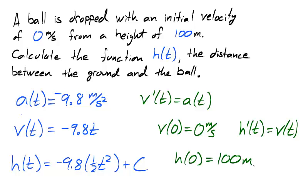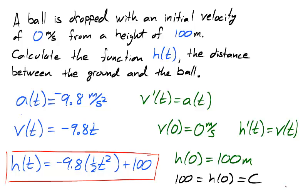And in the problem, we're told that the initial height of the ball, at t equals 0, is 100 meters, which tells us that c is 100, and we've calculated the height of the ball.